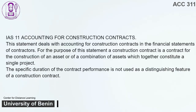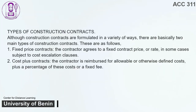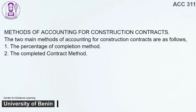IAS 11 — Accounting for Construction Contracts. This statement deals with accounting for construction contracts and the financial statements of contractors. A construction contract is a contract for the construction of an asset or a combination of assets that together constitute a single project. The specific duration of the contract performance is not used as a distinguishing feature. Types of Construction Contracts: 1. Fixed price contracts — the contractor agrees to a fixed contract price, in some cases subject to cost escalation clauses. 2. Cost plus contracts — the contractor is reimbursed for allowable costs, plus a percentage of these costs or a fixed fee. Methods of accounting for construction contracts: 1. The percentage of completion method. 2. The completed contract method.